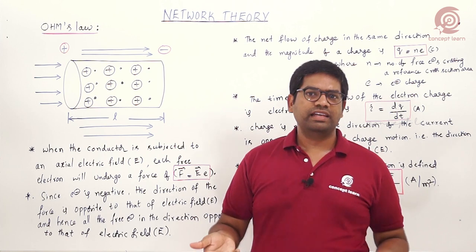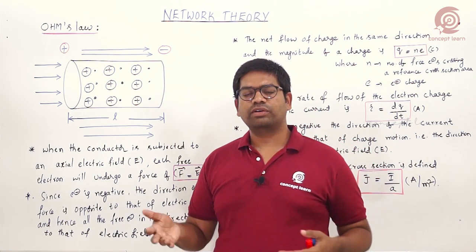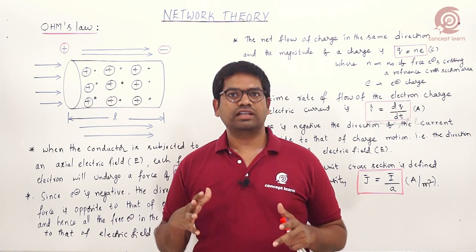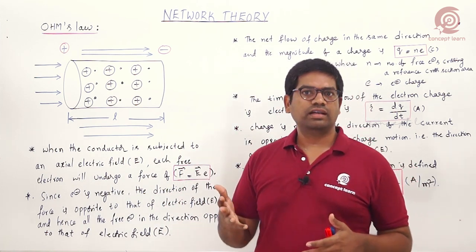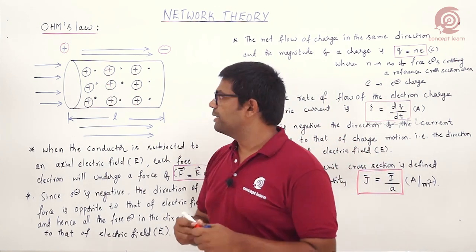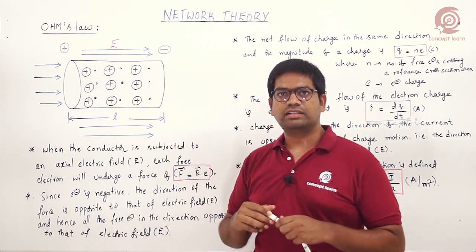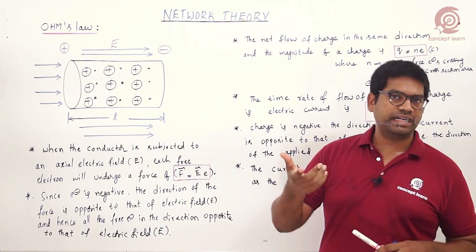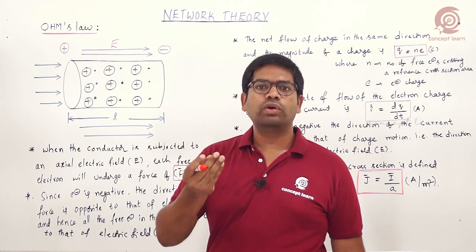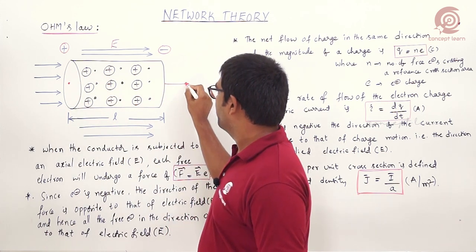A conductor is a material consisting of several atoms. Each atom consists of basic particles: electrons, protons, and neutrons. When we are not applying any external force or energy, these particles are randomly present in the conductor. When we apply external energy in the form of an electric field, which is voltage per unit length, things change.